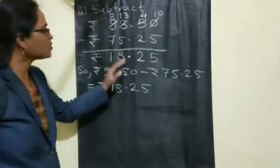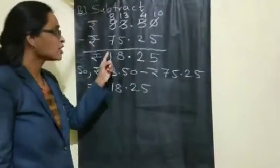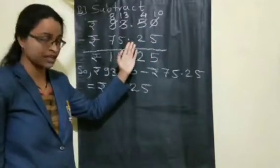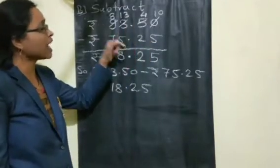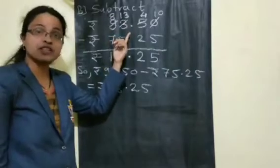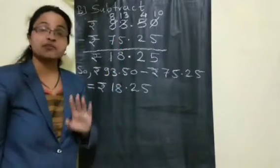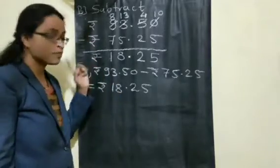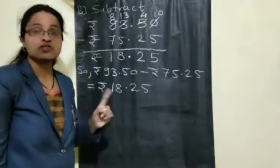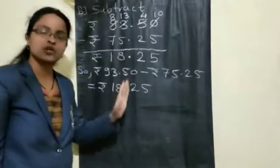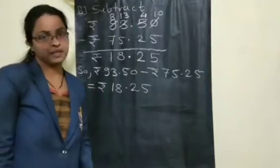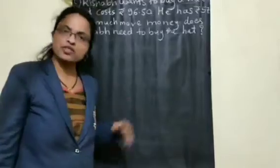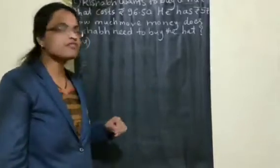Like this, you people have to solve the problems. Wherever required, if it is not possible to subtract, you have to borrow from the neighbor, and how much is left — write that correctly without fail. And subtract the numbers properly. Don't forget to write the rupees symbol because it is money, and give the dot to separate rupees and paise. Now, let us solve word problems based on subtraction of money.